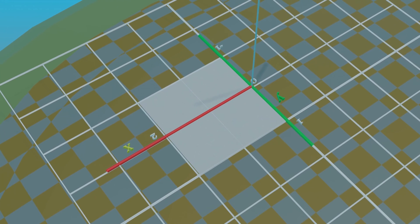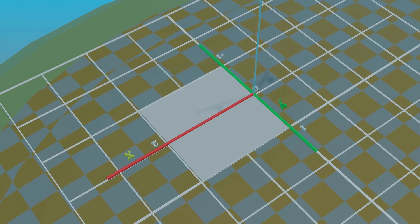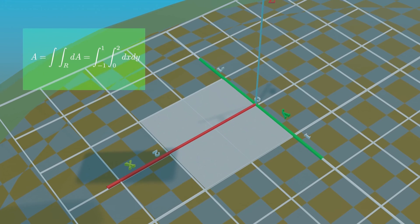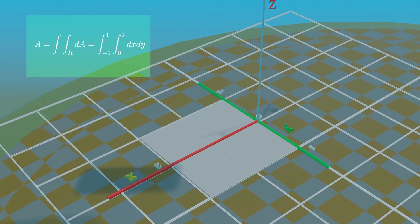Now, if you double integrate over this general region, you only get the area of this square. But we want the volume.